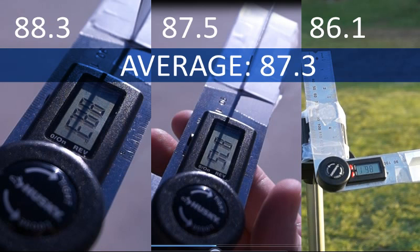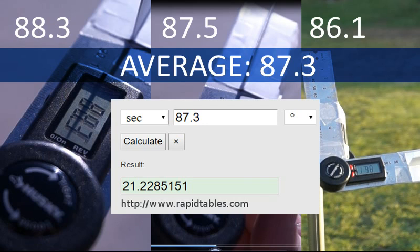So let's use the average of 87.3. At 87.3, the distance ratio calculates to 21.2, meaning the sun is 21.2 times farther away than the moon.